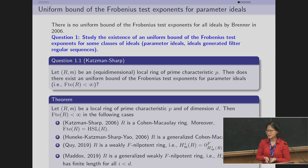We move to the second part of my talk: questions and results. There is no uniform bound of the Frobenius test exponent for all ideals by Brenner in 2006. The first question we consider is studying the existence of a uniform bound of the Frobenius test exponent for some classes of ideals: parameter ideals and ideals generated by filter regular sequences.